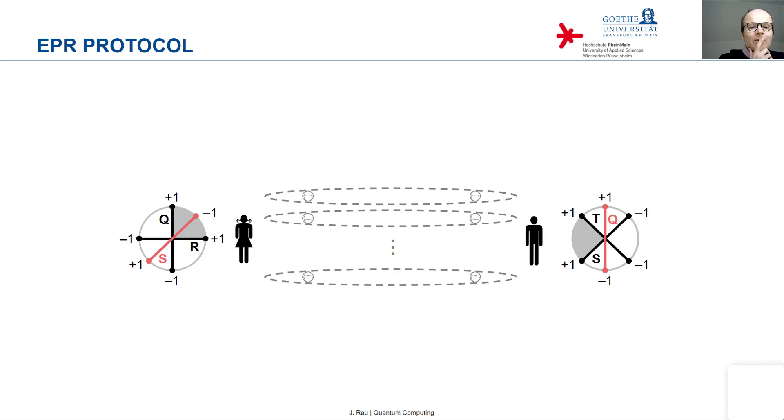And we discussed in one of the previous lectures the monogamy of entanglement. We discussed the fact that if you have two systems that are in an entangled state, they cannot be correlated in any way with a third system.